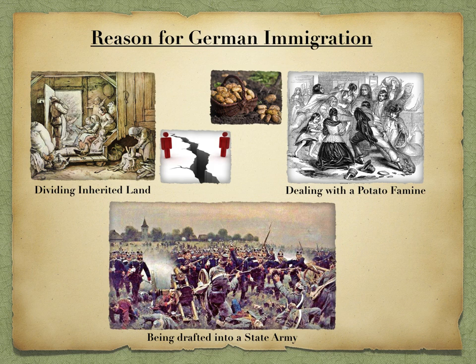In addition, inheritance traditions of dividing farms among families was making farms so small that they were unsuccessful. The population had grown very large and was dependent on the potato to sustain it. In 1840, rural Germany was struck by the potato blight, which led to famine. Additionally, foreign imports, especially cloth from England, flooded the German market and German industry could not compete.